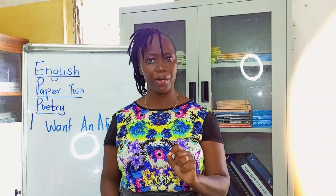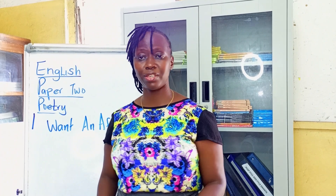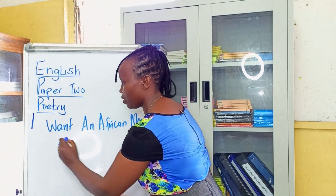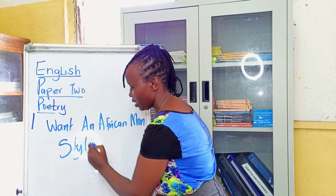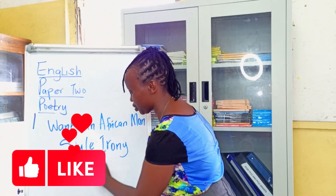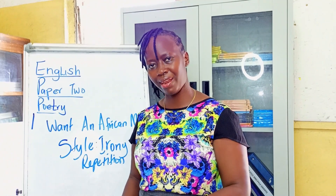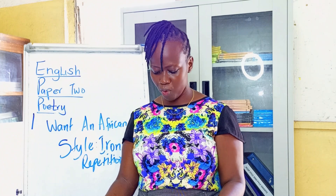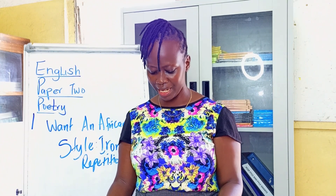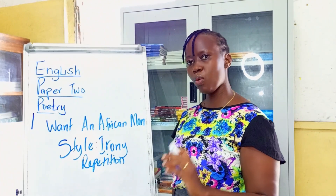Did you notice there is another style in that poem? The persona keeps on saying 'I want an African man.' That is the use of repetition. When we talk of style, it's not just irony — you have also seen the use of repetition. She keeps on saying 'I want an African man who will waylay me,' 'I want an African man who does last night's ugali leftovers.' That's the use of repetition — words can be repeated, but this one has repeated phrases.